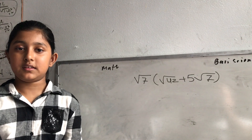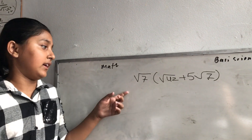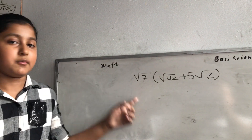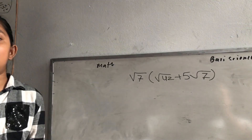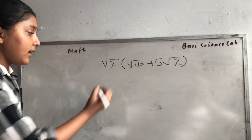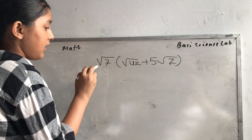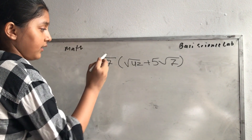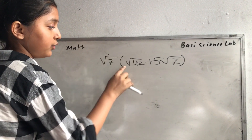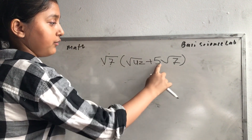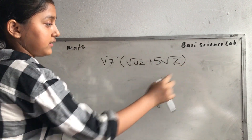My name is Jan Sabari. Right now I have a math problem so let's solve it together. First you have to distribute root 7 to root 42 and root 5 root 7.